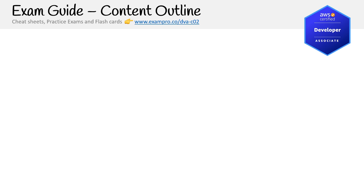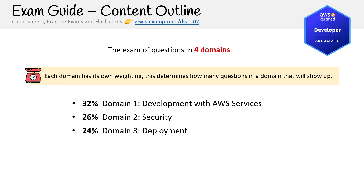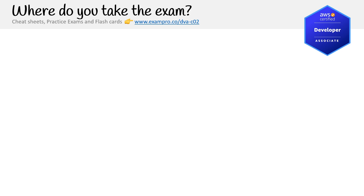The exam has four domains, each weighted differently. The previous version had six domains. We have: Domain 1 — Development with AWS Services; Domain 2 — Security; Domain 3 — Deployment; Domain 4 — Troubleshooting and Optimization. There are things in the exam guide that I've never personally seen on the exam, but others say they appear — so I'm creating content based on the exam guide and what people are seeing. When we look at the exam guide together, we'll discuss this more.